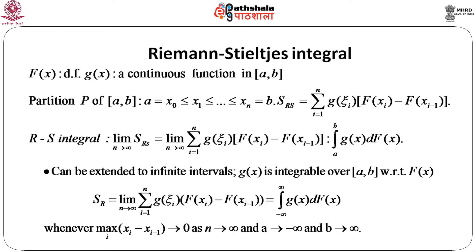We consider the limit of this sum as n goes to infinity — that is, as the number of points in the partition goes to infinity. If this limit exists, it is nothing but the Riemann-Stieltjes integral, denoted ∫ₐᵇ g(x) dF(x), meaning we integrate g(x) with respect to the distribution function F(x). This can be extended to infinite limits — from minus infinity to infinity — provided g(x) is integrable over [a, b] with respect to F(x) for any a, b on the real line, and the mesh of the partition goes to zero as n → ∞.